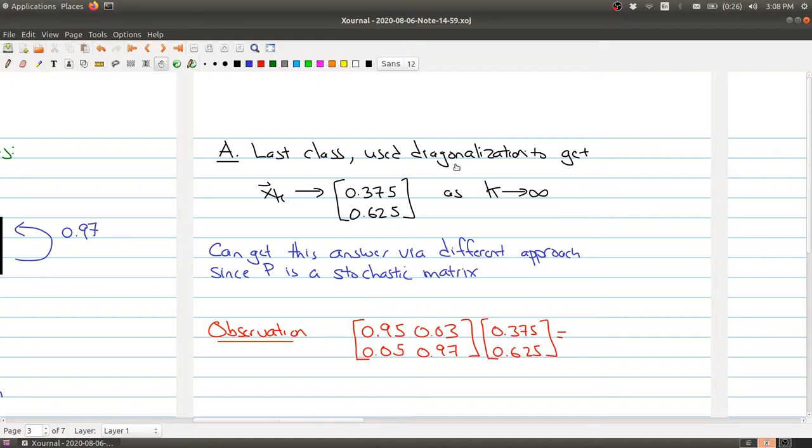What we're going to do here is show a different way of getting the exact same answer by using the fact that we now have additional information about the matrix that's doing the transition—we have a stochastic matrix. We know what the answer is, but let's say something a little bit more about this vector.